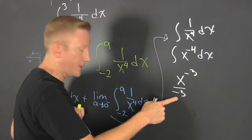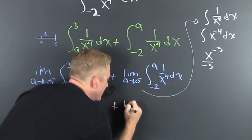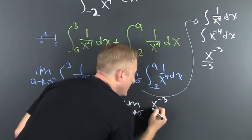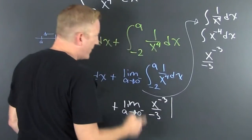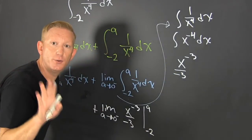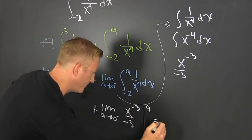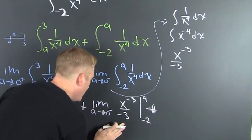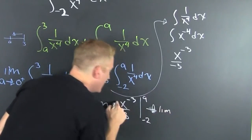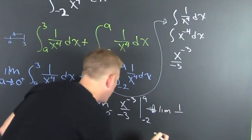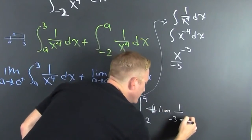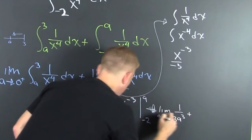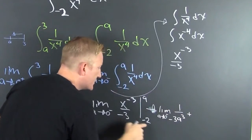We see this is going to be x to the minus 3 over minus 3. Let's sub it back in. So this is plus the limit as a goes to 0 from the left of x to the minus 3 over minus 3, evaluated from minus 2 to a. Plugging that in, this becomes 1 over minus 3 times a to the third, and then minus — which becomes plus — the term with minus 2 in there.